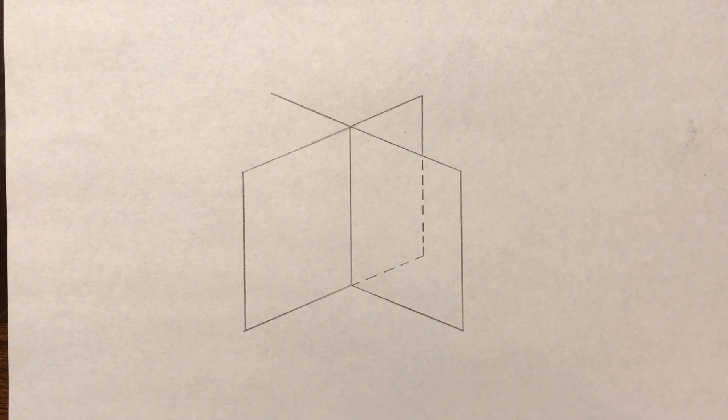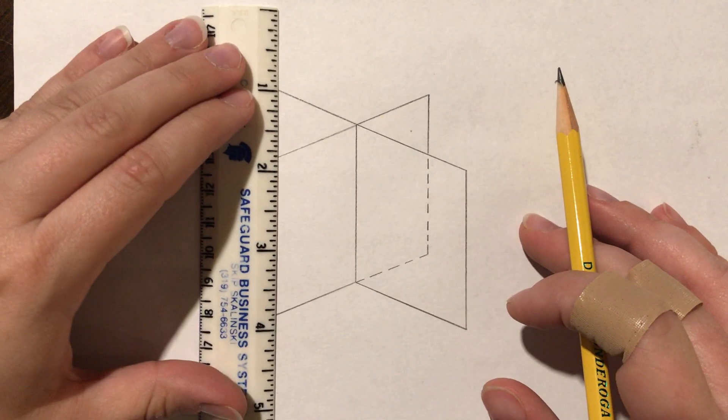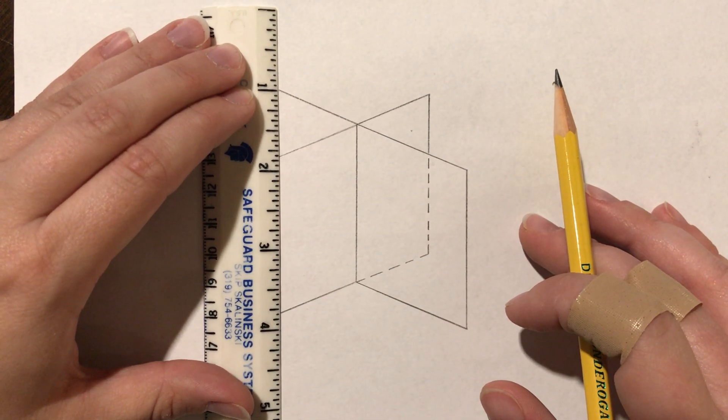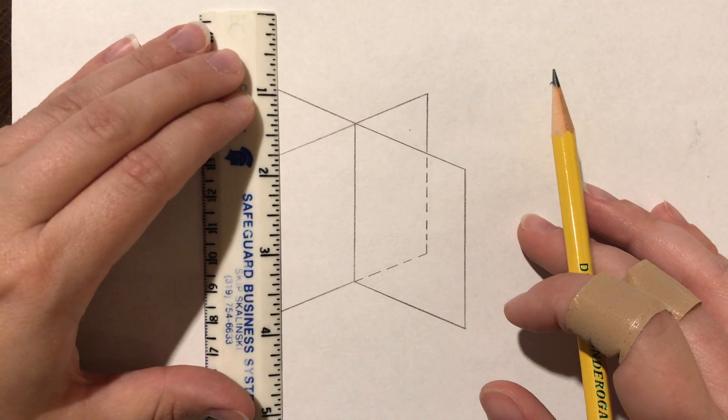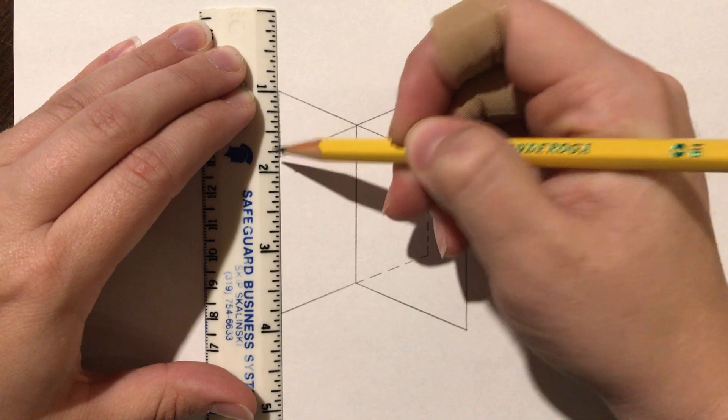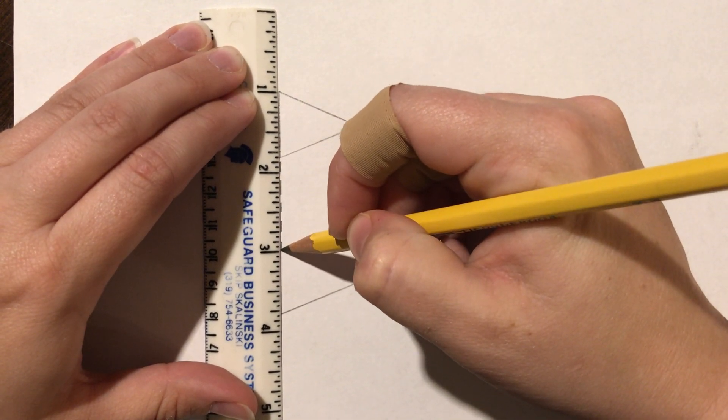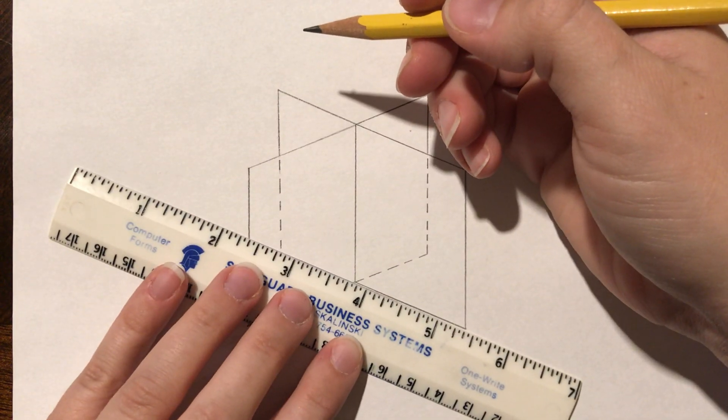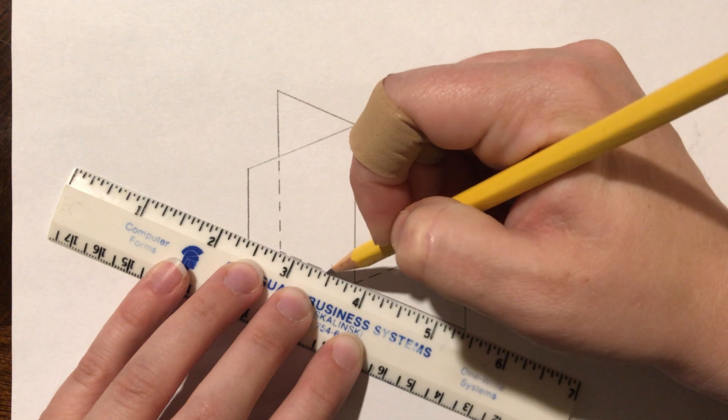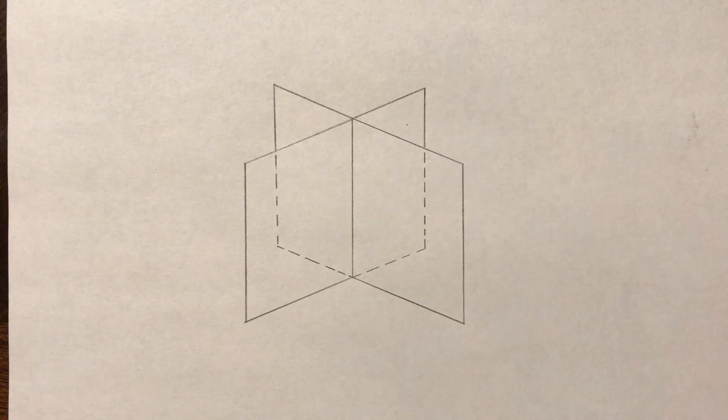And then we're just going to do the same thing with the other side. So we're going to go two inches, vertical line from here. So I'm going to make sure it's vertical here. Solid and then go dashed. And then again, should make a nice little parallelogram, so it should meet exactly where we need it to. It's still behind the plane, so we're going dashed.